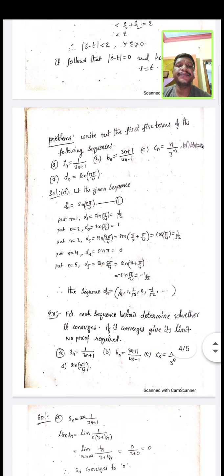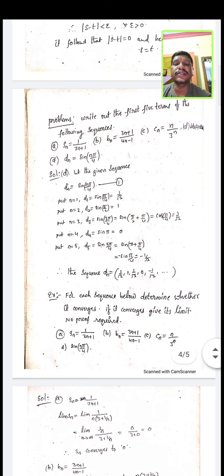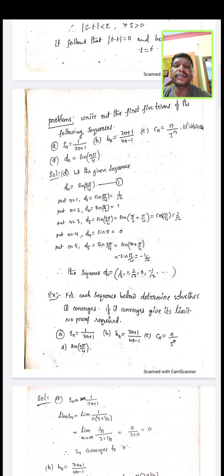Now take another example: write out the first five terms of the following sequences. For S_N = 1/(3n + 1): S₁ = 1/(3+1) = 1/4, S₂ = 1/(6+1) = 1/7, and so on. Similarly for the second example 3n+1 by 4n-1, you can find the first five terms easily.